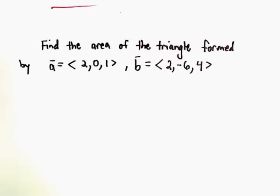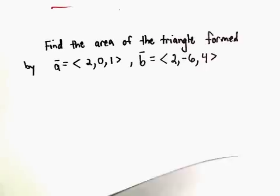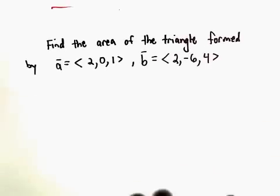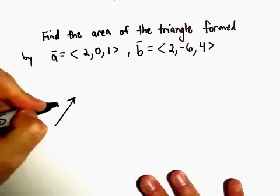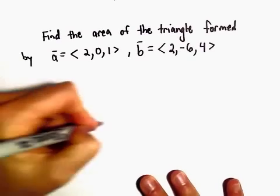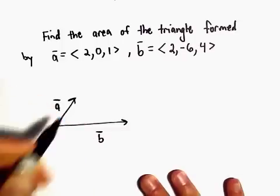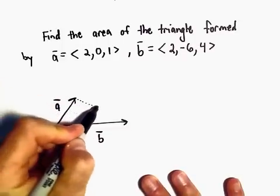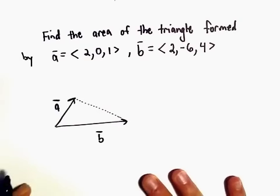So the basic idea here: we've got some vector A, we have some vector B. The idea is we want the area of the triangle formed by those two vectors.